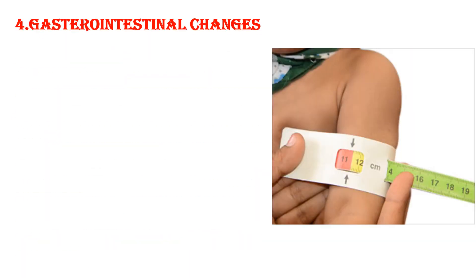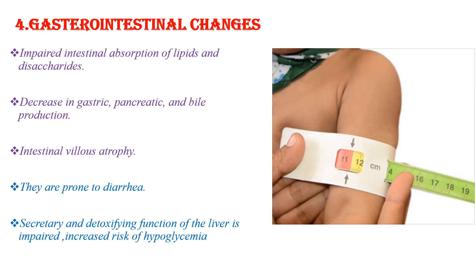When we come to GI changes, impaired intestinal absorption of lipids and disaccharides occurs during malnutrition because there is a decrease in gastric, pancreatic, and bile production. There is also intestinal villous atrophy, which makes them prone to malabsorption and diarrhea. Secretory and detoxifying function of the liver is impaired, and they are at increased risk of hypoglycemia due to decreased secretory function of the liver and due to lack of calories.